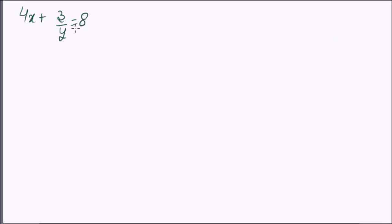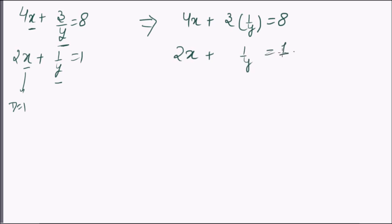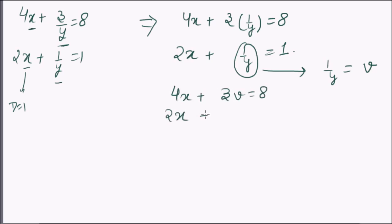Similarly, we can have another example: 4x + 3/y = 8 and 2x + 1/y = 1. Here the first term x has degree one but the second variable does not. So we modify it as 4x + 3 × (1/y) = 8 and 2x + 1/y = 1. Substituting 1/y as v, we get 4x + 3v = 8 and 2x + v = 1.